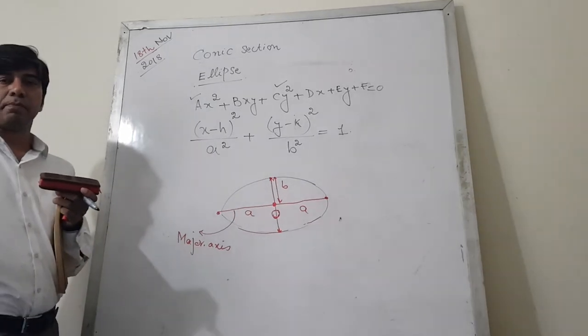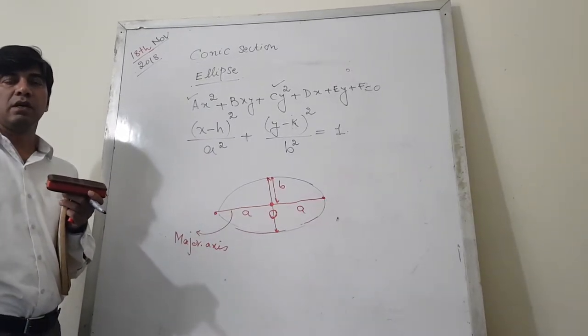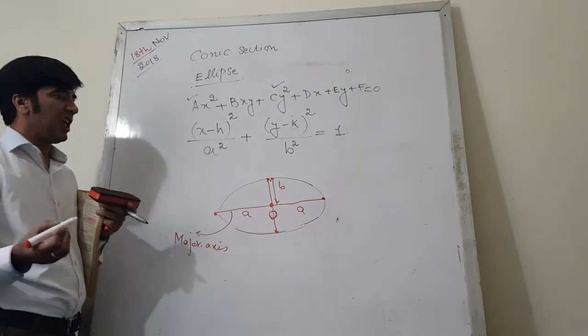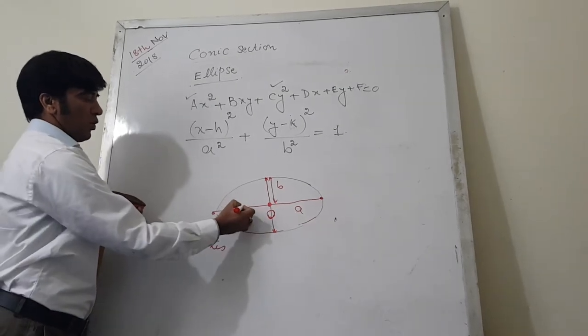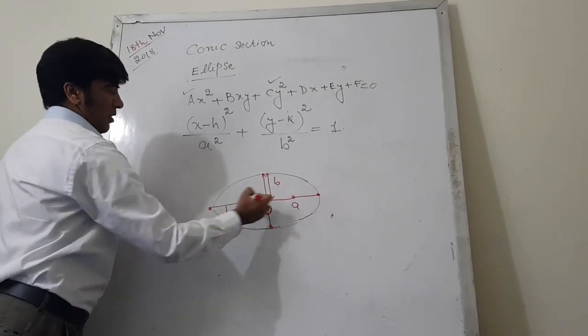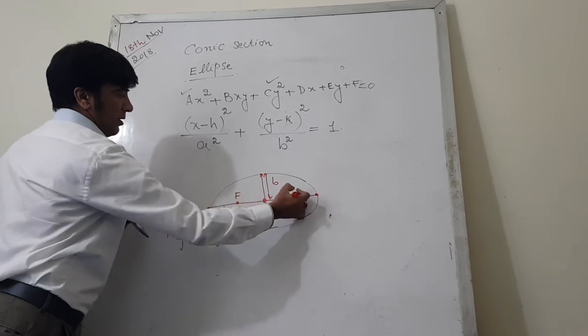As I told you in the parabola that there is only one focus point, but in case of ellipse there are two focus points. This and this.